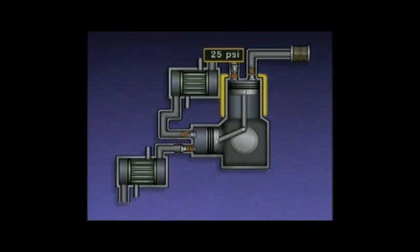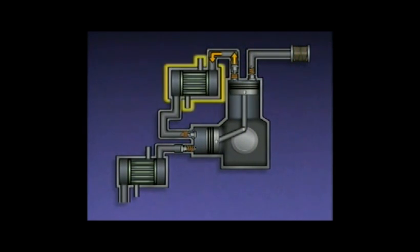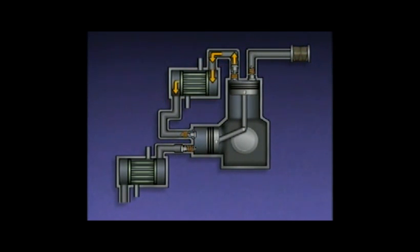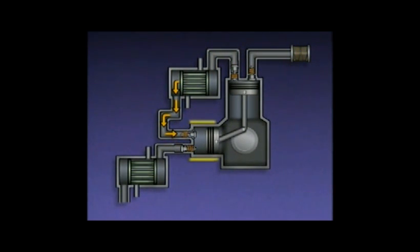As the air is compressed, its temperature increases. The air that leaves the first stage of the compressor is routed to the intercooler, which is a shell and tube heat exchanger. As the air passes through the tubes in the intercooler, it is cooled by water flowing around the tubes. The cooled air from the intercooler is then routed to the second stage of the compressor.